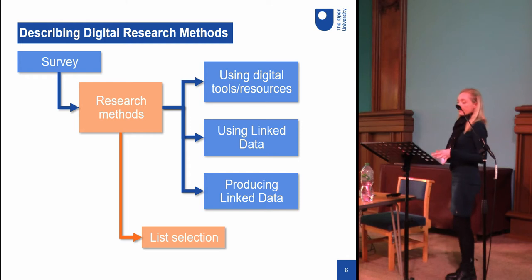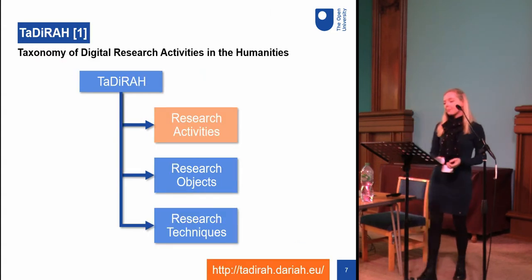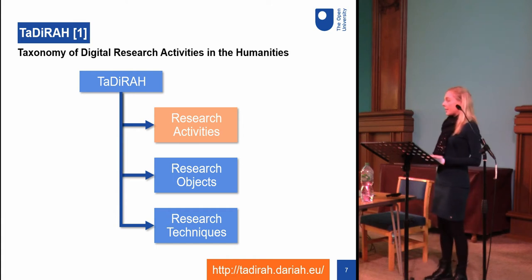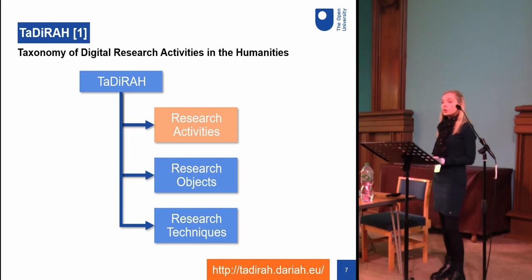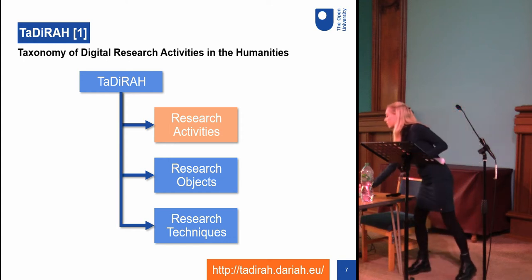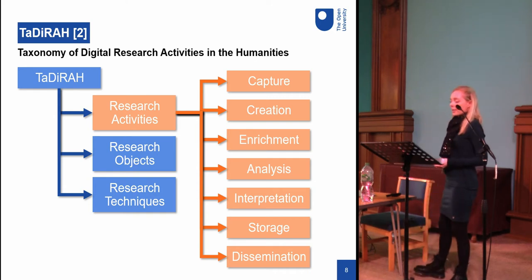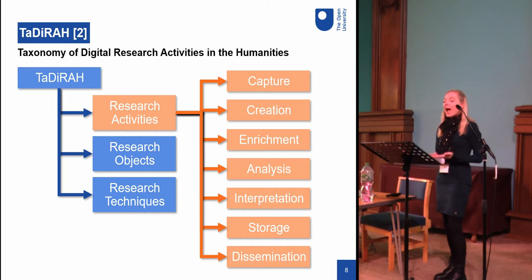To facilitate both the survey process and my subsequent analysis, I needed these methods described using consistent terms, which required a master list of digital methods — enter TaDiRAH. TaDiRAH is the Taxonomy of Digital Research Activities in the Humanities. It describes digital methods, techniques, or resources that can be used in humanities research and is divided into three categories: research activities, research objects, and research techniques. I was interested in research activities, which has seven subcategories: capture, creation, enrichment, analysis, interpretation, storage, and dissemination.